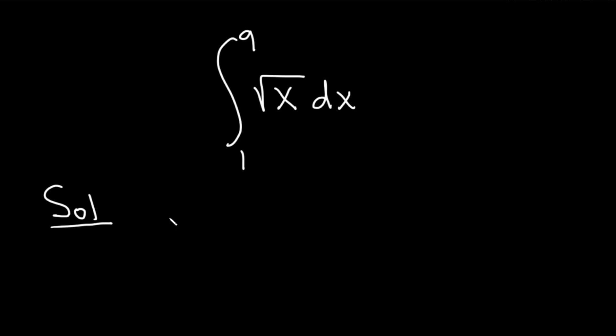So the goal in this problem is to write this in a way which will allow us to use what's called the power rule. The power rule from calculus says if you have x to the n dx and n is not equal to negative 1, then this is equal to x to the n plus 1 over n plus 1 plus C.